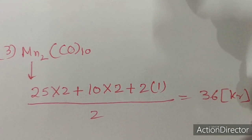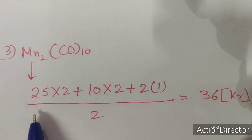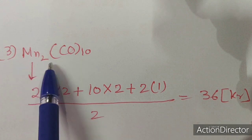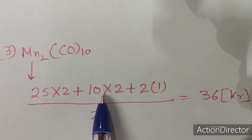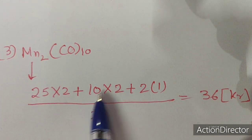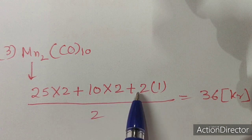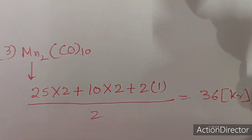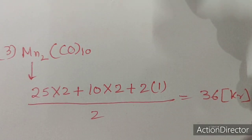The next example is Mn2CO10. Manganese's atomic number is 25, there are 2 metals, 10 ligands donating electrons, and 1 metal-metal bond. So again it is following the EAN rule.